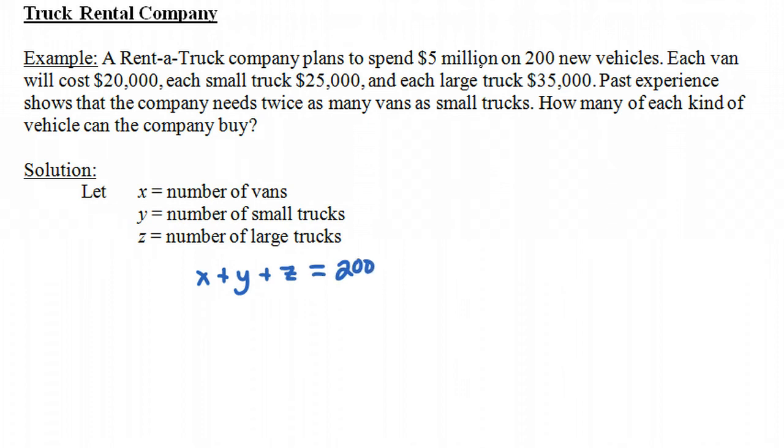Another piece of information that we have is that they're going to plan to spend $5 million. How much are they going to spend on vans? Well, it depends on how many vans they buy. Each van costs $20,000. So if they buy x vans, they'll spend 20,000 times x. The amount that they'll spend on small trucks is 25,000 times y, and the amount they'll spend on large trucks is 35,000 times z. And that's going to total up to be $5 million.